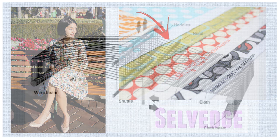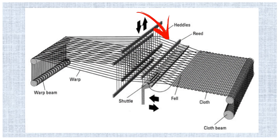This is a loom and the threads that run all the way along are called the warp threads. These threads are lifted up and down by the heddles to make room for the weft threads. Those weft threads are in a shuttle that gets pushed through from one side to the other of the loom.